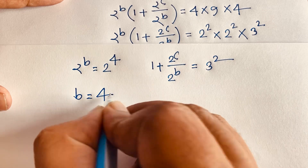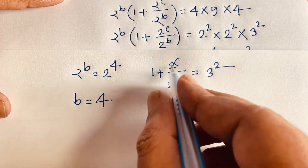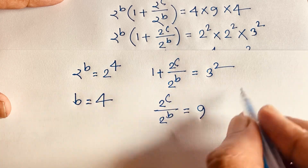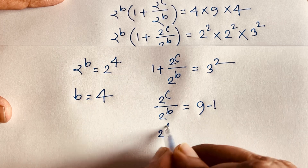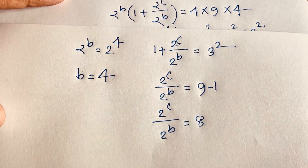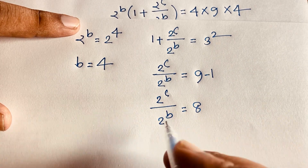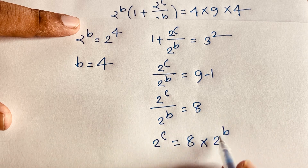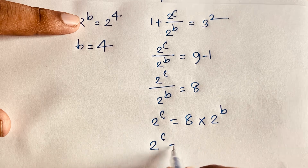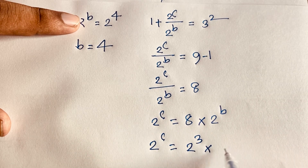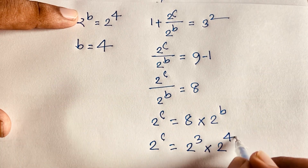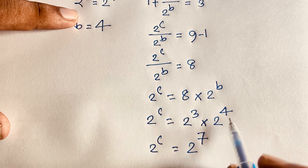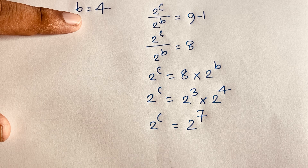We found b is equal to 4. In this expression, 1 plus 2^c over 2^b equals 3^2, which is 9. Moving 1 to the other side: 2^c over 2^b equals 8. Since b is 4, 2^c equals 8 times 2^4 equals 2^3 times 2^4 equals 2^7. So c is equal to 7.